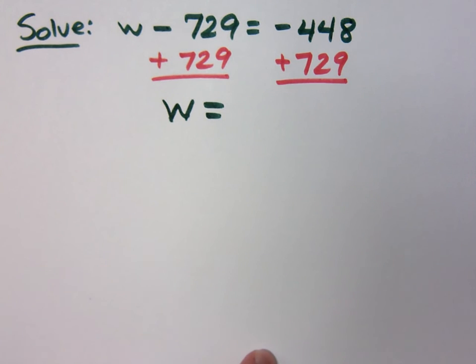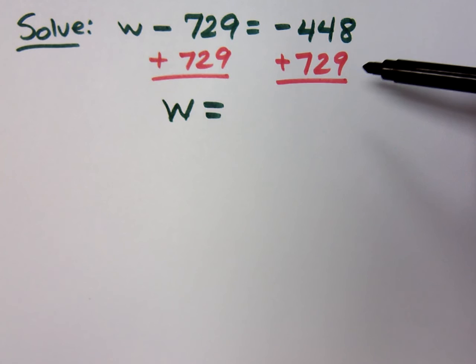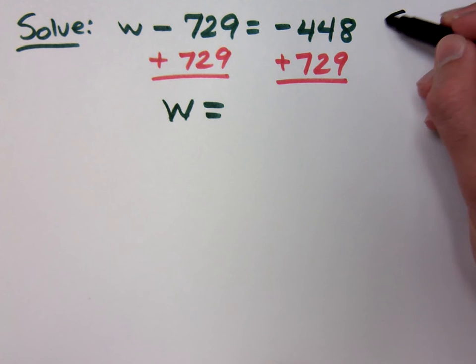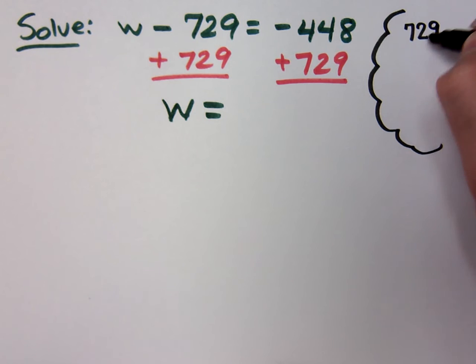but on the right side, it's a little bit different. You have a positive and a negative, so you have to find the difference between these. When you find the difference between two numbers, you need to do subtraction, and it's going to be the larger number minus the smaller number. So you need to find the difference between 729 and 448.